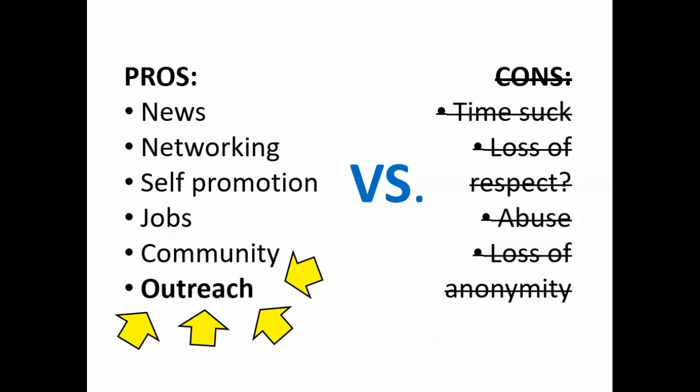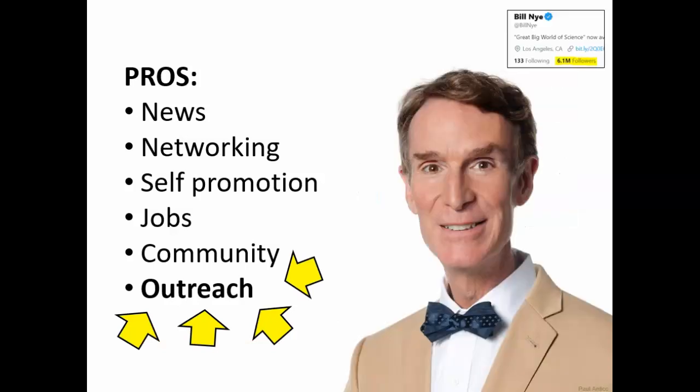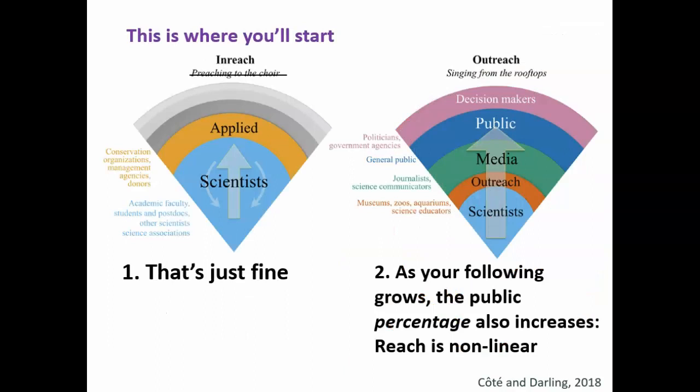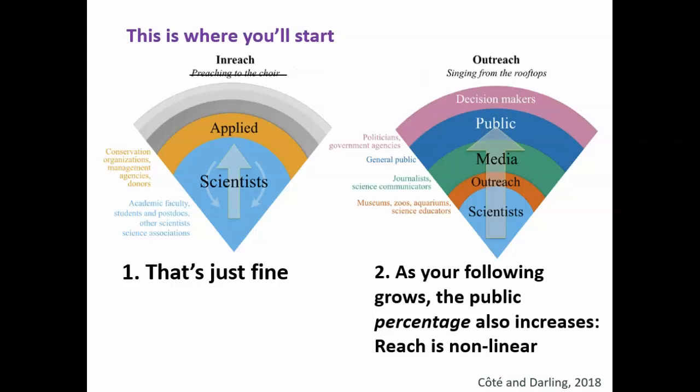Okay, you've committed. You're going to be an outreach master, and in fact, you're going to be the next Bill Nye. Reality check — you're not. The average scientist has followers in the hundreds. Only a very small percentage break the thousand mark, and a truly infinitesimal number get beyond that. But that's okay. Even if you start with a small audience of mostly your peers, you're communicating, and you'll benefit from that exchange. But as you continue posting, your following will grow, and with it, your public impact.